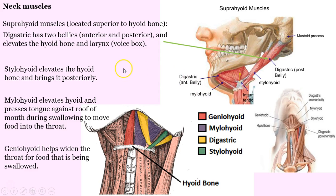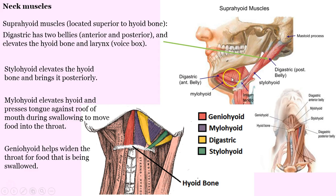We'll start with the supra. Look at the digastric — the digastric has a posterior belly and an anterior. Anterior is going to be near the front, attaching near the chin, the inferior surface. Many of these muscles are going to elevate the hyoid. So if you're taking a test and asked what's the action of one of these suprahyoid muscles, you're going to think it does at least elevate the hyoid and the voice box. In the case of digastric, the stylohyoid brings it a little bit posteriorly. The mylohyoid is going to elevate the hyoid and press the tongue against the roof of the mouth when we swallow.